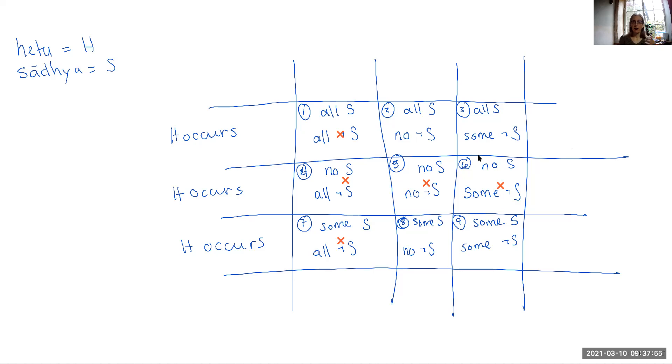Now what happens in the case where H does occur in all of the things that have the target property? This is good. We need this. But it also sometimes occurs in some of the ones that don't. Then we again can't show the negative concomitants. We can't show that not having the Hetu means that you don't have the Sadia because some things that do have the Hetu also don't have the Sadia, but you also don't have the positive concomitants. You can't say, well, everywhere that you have H, you also have S because in some cases you have not S. So that means this is not going to be acceptable, nor is this one.